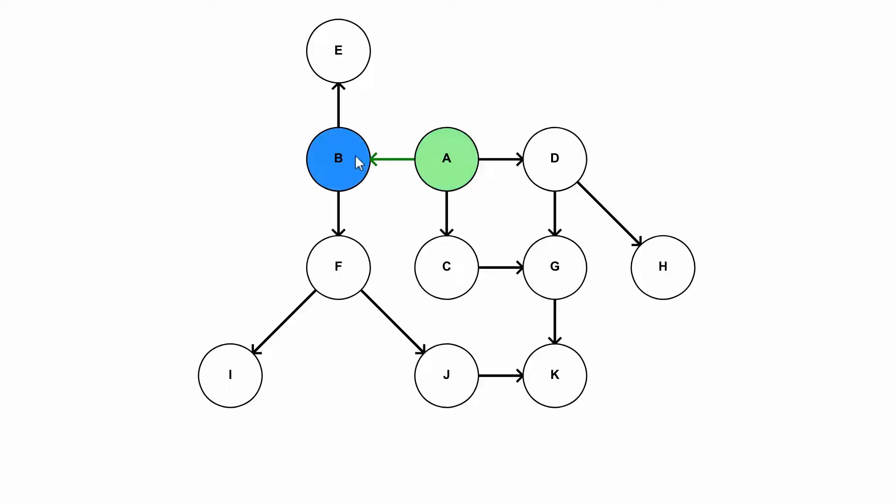So we start with A. And then we just do a depth-first search. So we go to B, and then F, and then I. So I is a node that we're actually going to return out of. So we're going to be done with I now, which means we're going to add it down here.